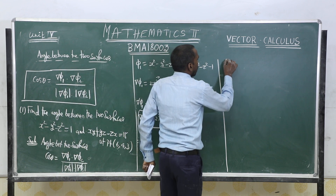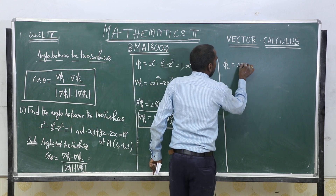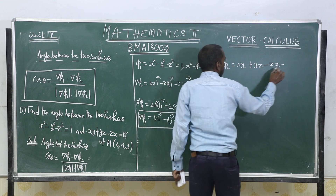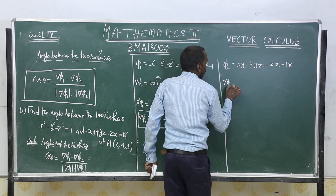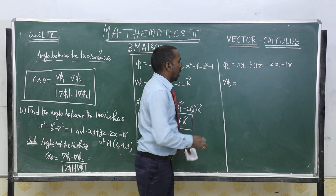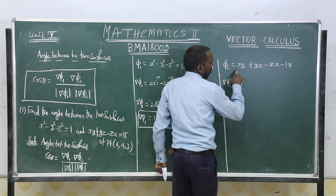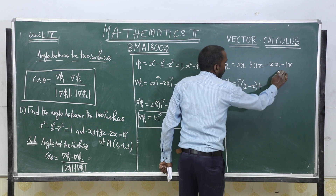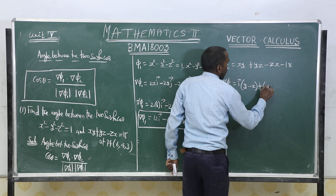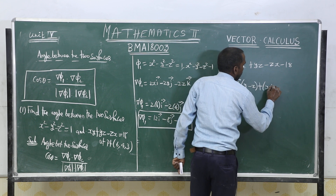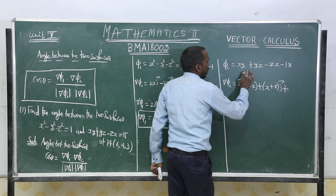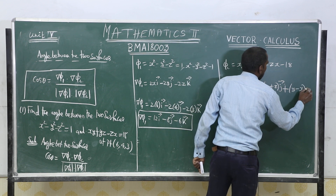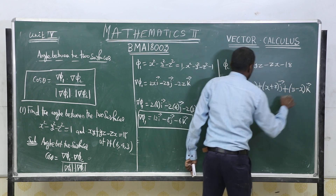Next, find φ₂: xy + yz - zx - 18 = 0. Compute ∇φ₂ by differentiating with respect to x: (y - z)i; with respect to y: (x + z)j; with respect to z: (y - x)k. So ∇φ₂ = (y-z)i + (x+z)j + (y-x)k.